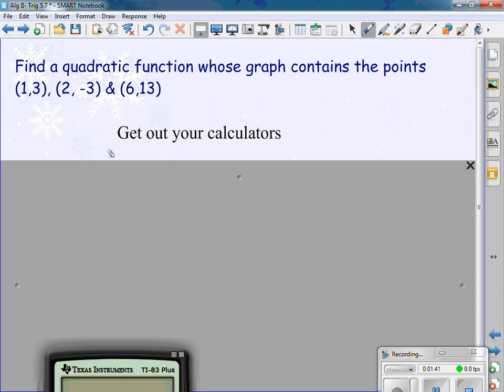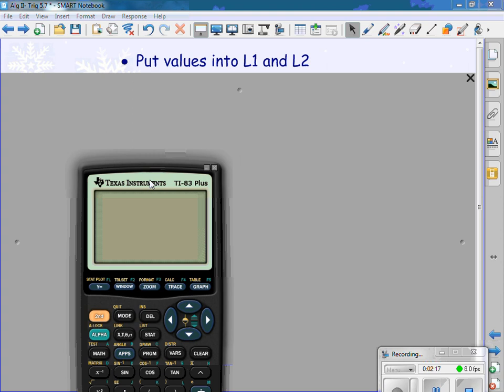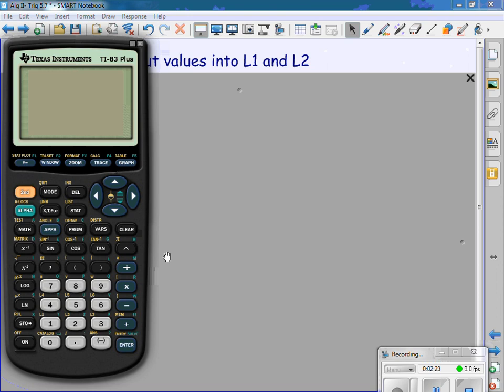I need to put this information in my calculator. How do I put these points in the calculator? Y equals only works for writing in equations. I don't have equations. We have to put our values into L1 and L2. We have done this earlier this year. I press stat. I press stat and I press enter.